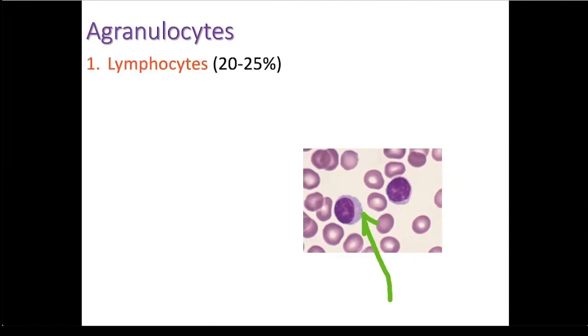There are two types of agranulocytes. Lymphocytes, which make up 20 to 25 percent of the leukocytes, are involved in your specific immune response.